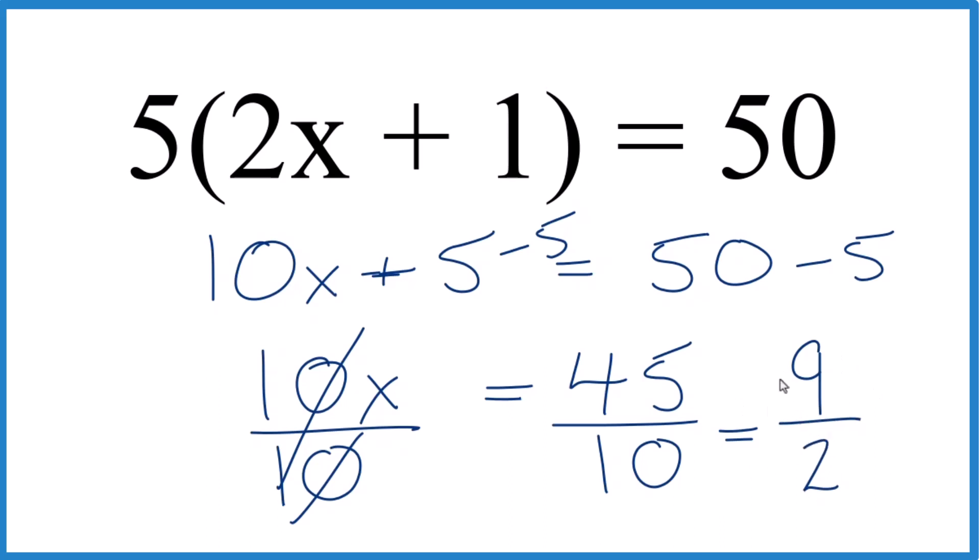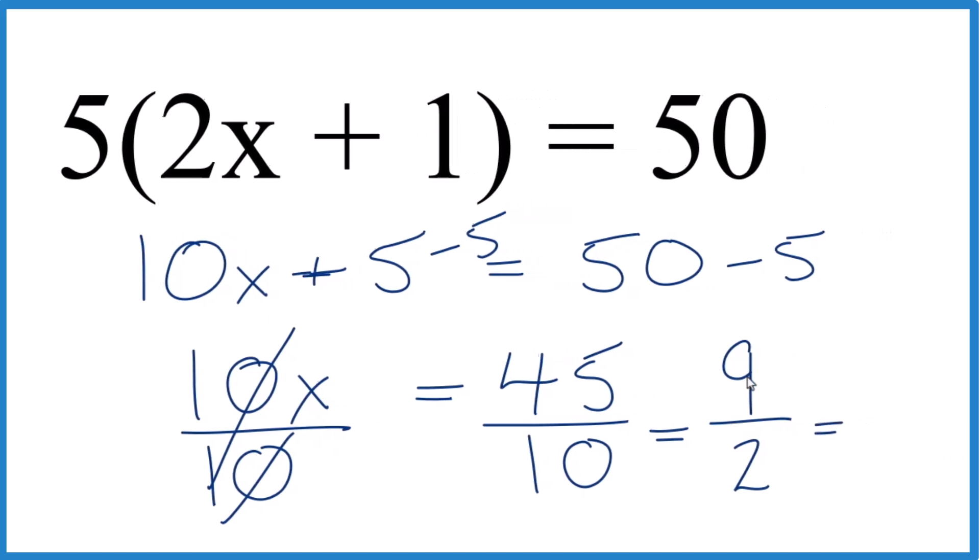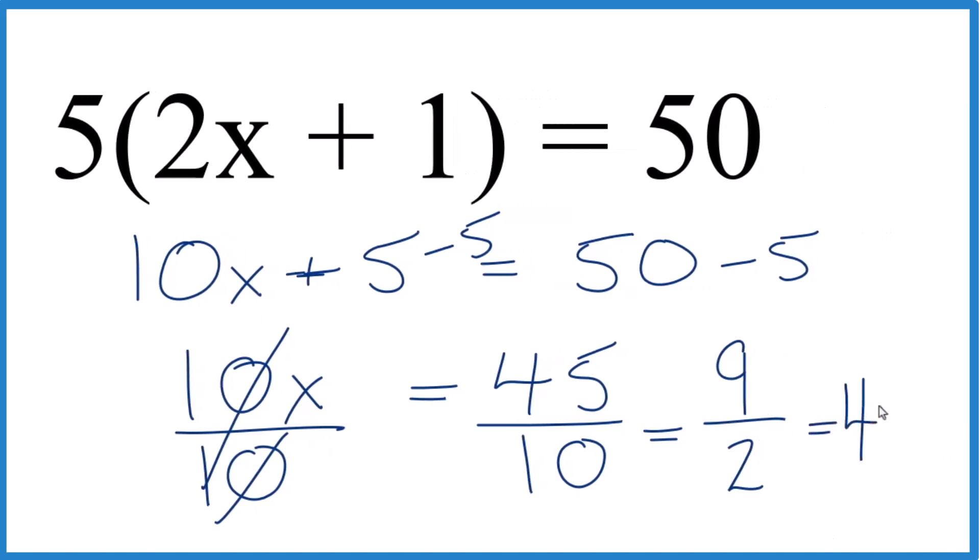And this is an improper fraction. We could convert this to a mixed number. 2 goes into 9 4 times with 1 left over. Bring the denominator across.